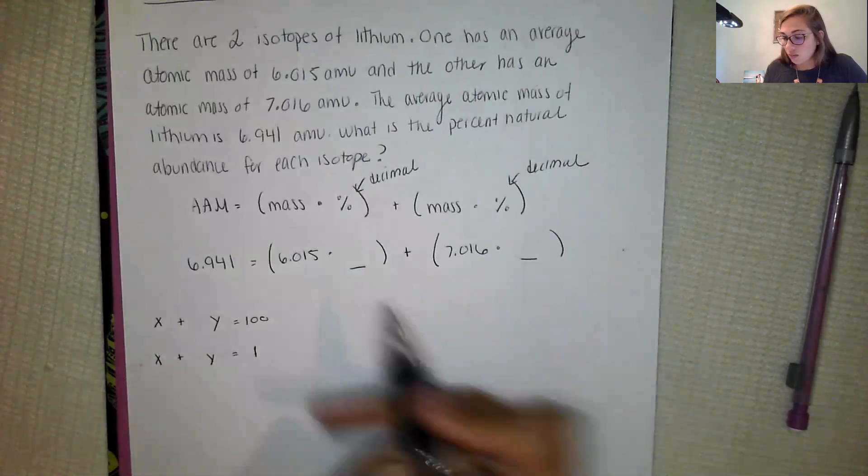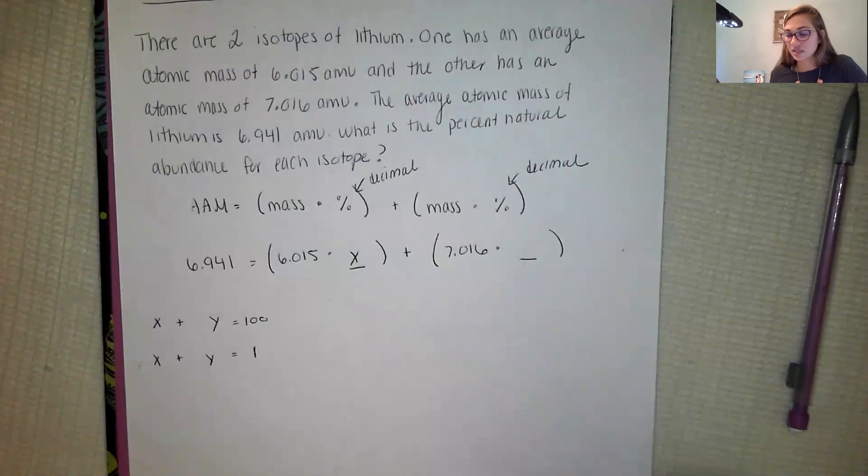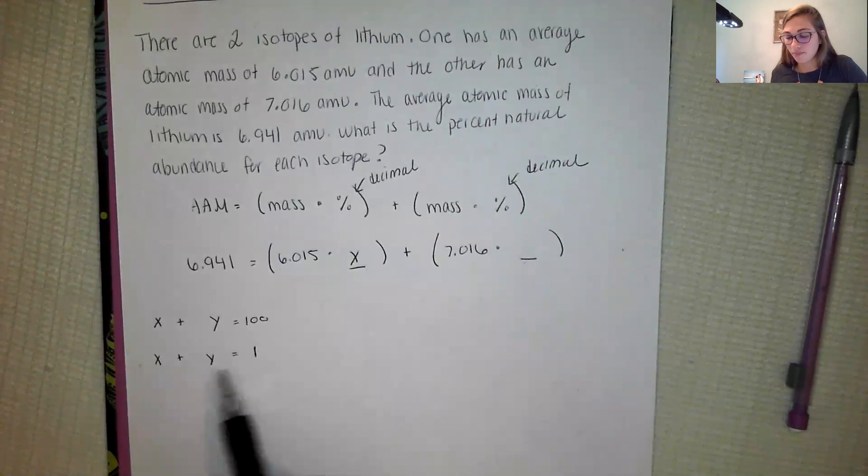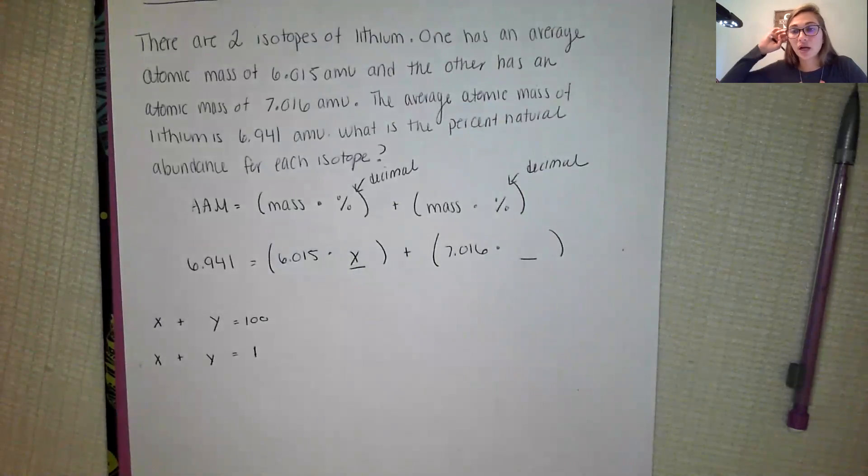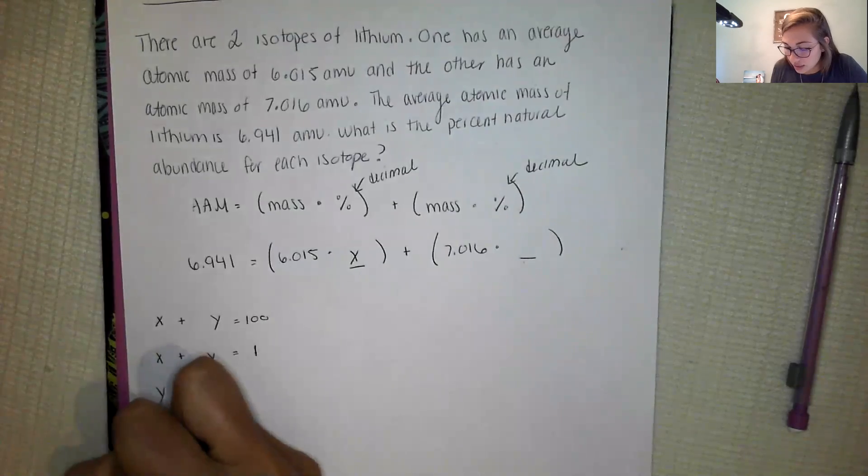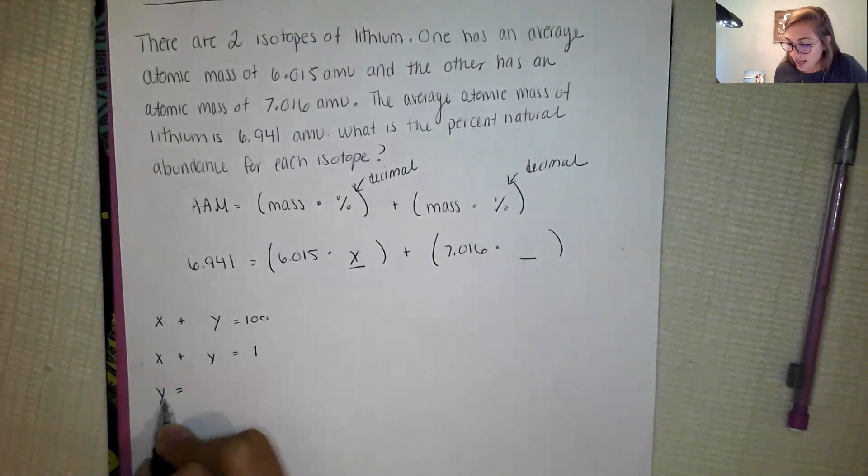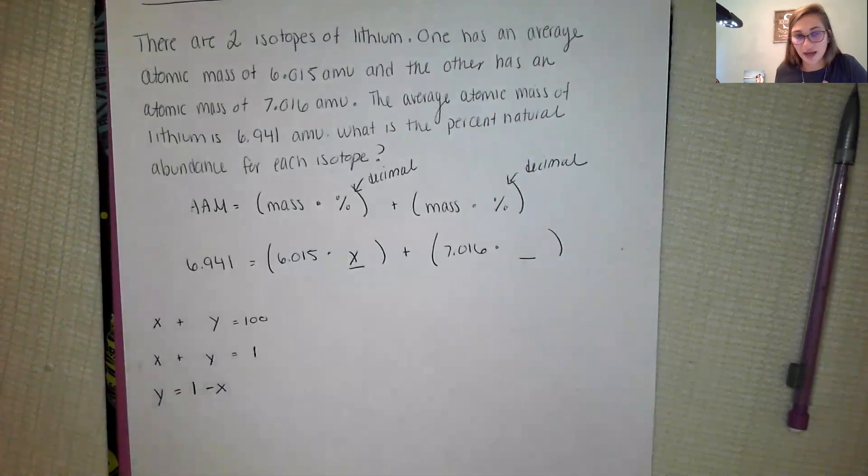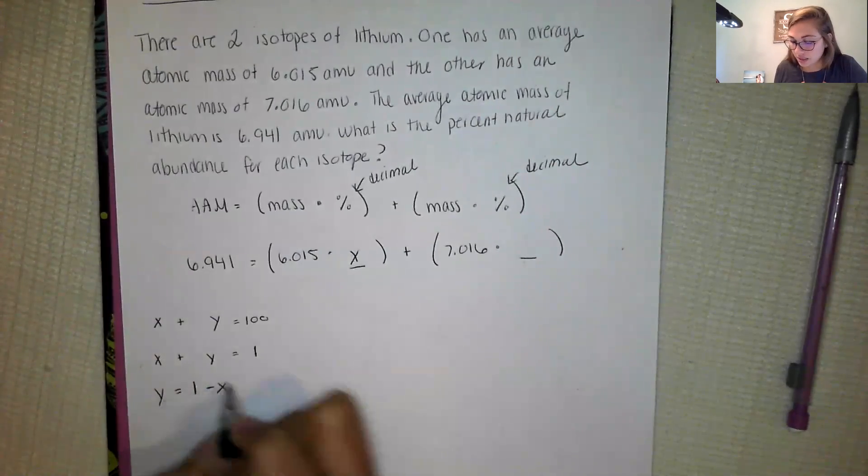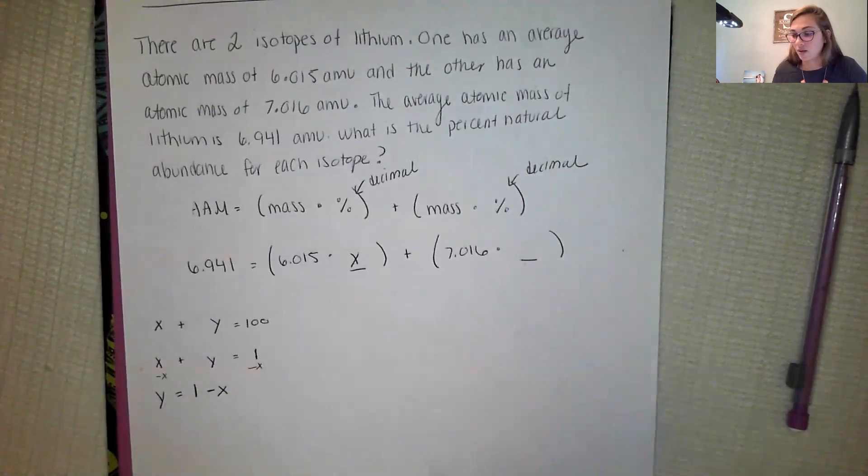So one of these is going to be X and the other one is going to be Y and it doesn't really matter which one is which, but I'm not solving for two variables here because that makes solving an equation very difficult. So what I do is I get it in terms of X. So that means Y is equal to 1 minus X, using algebra here. I subtract X from each side so that I can plug into my equation.